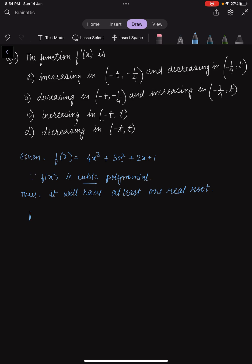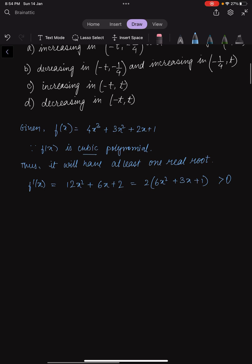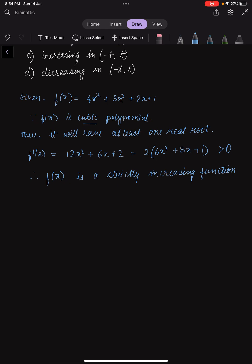We will find what f'(x) is. f'(x) turns out to be 12x² + 6x + 2. Simplifying, we take 2 common to get 2(6x² + 3x + 1). This expression is positive, so we can see that f(x) is a strictly increasing function — because it is a cubic function and f'(x) is positive.